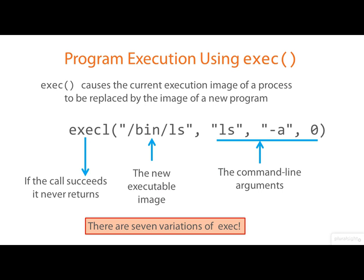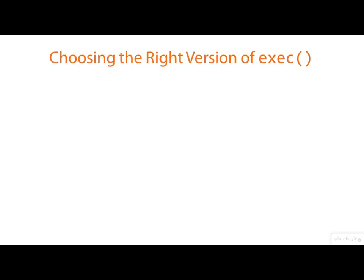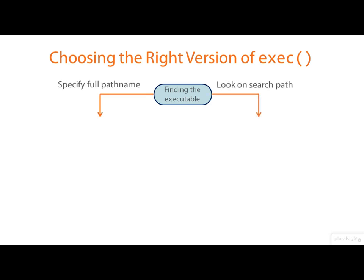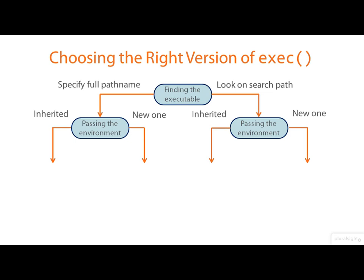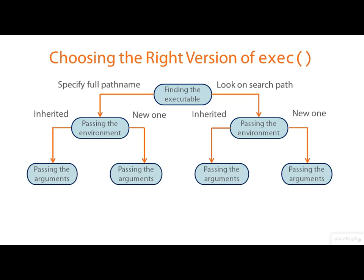It turns out that there are seven variations on exec. In an attempt to make sense of them, I've drawn a sort of decision tree. The first decision is how do you want to find the executable — do you want to specify a full path name, or do you want to look on the search path as defined by the PATH environment variable? The next decision is how do you want to pass the environment — pass a brand new one or inherit the one you've got? The third decision is how do you want to pass your command line arguments into the new program — as a list or as an array?